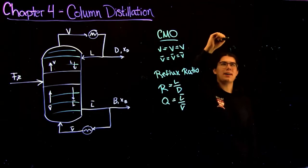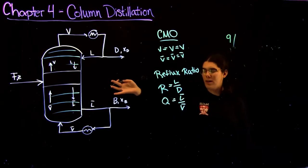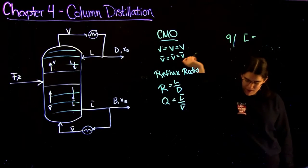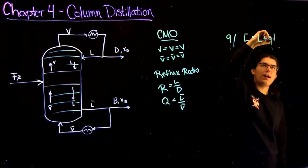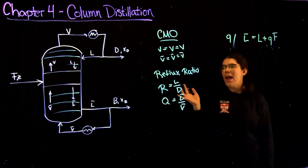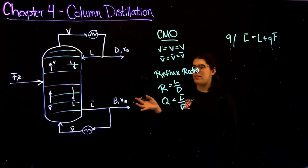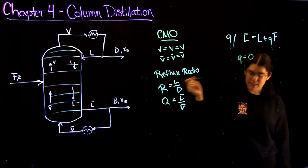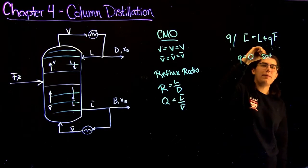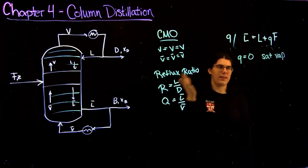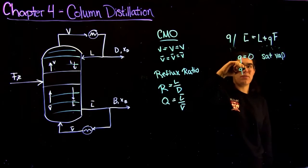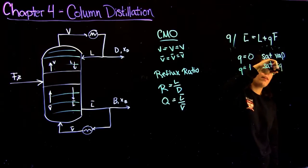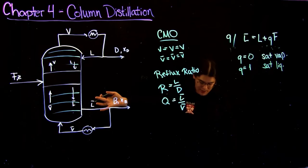A useful definition is Q. Q is basically the quality of your incoming feed stream. We define Q by saying L-bar equals L plus Q times F — so it's how much of your incoming feed is going to be added to the liquid. If you have Q equal to zero, basically you have a saturated vapor, because none of the feed is going into the liquid — it's all going to vapor. If you have Q equal to one, that means your feed is a saturated liquid and all of your feed is going into L-bar.